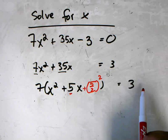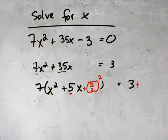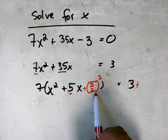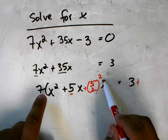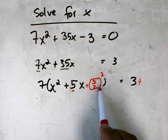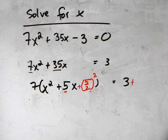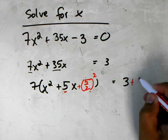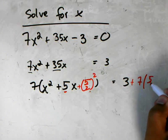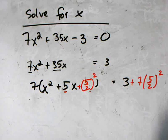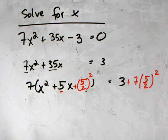Whatever I add to the left side, I have to add the exact same thing to the right side. But you got to be careful because this part is inside of the parentheses, so whatever you add here gets multiplied by 7. So in order to balance the equation, you're going to have to add 7 times (5/2)².